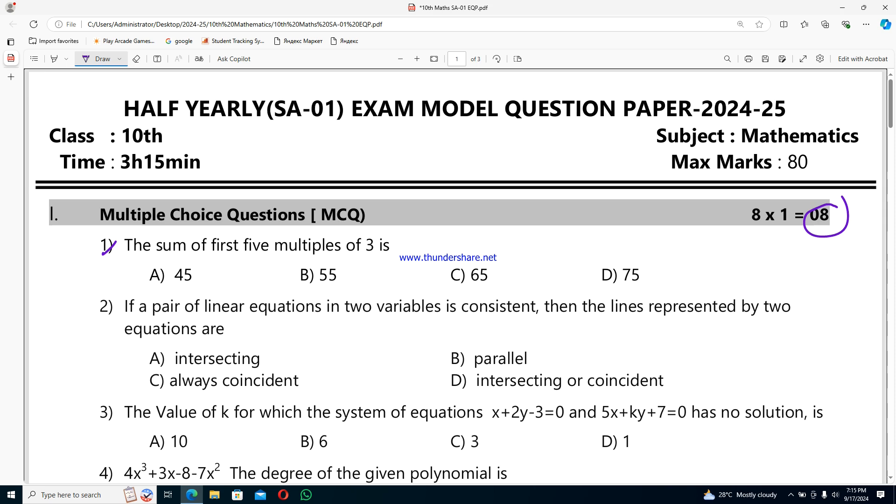option B 55, option C 65, option D 75. Second question: if a pair of linear equations in two variables is